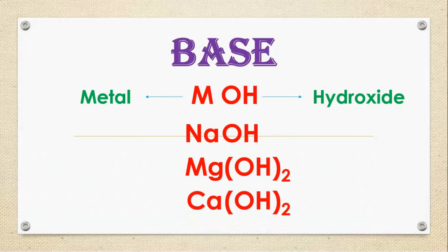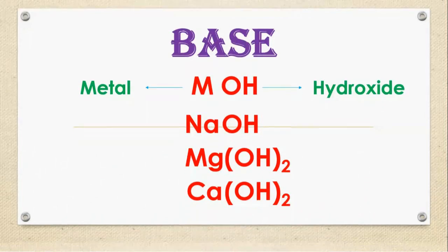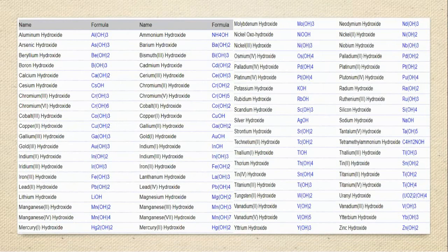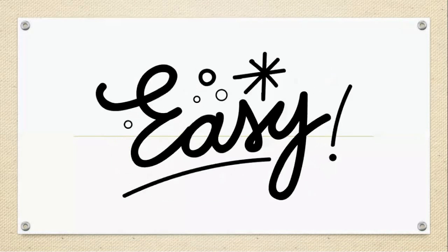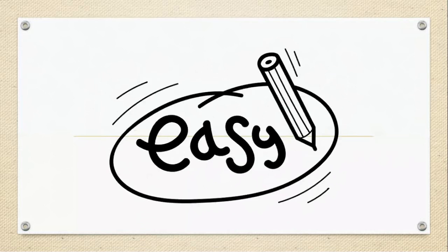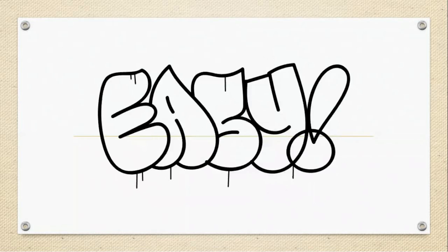So by looking at chemical formula, we can easily identify base. How? If a chemical formula is starting with a metal and ending with OH hydroxide, then it is base. You can see some list of bases and formulas. All these formulas you can observe, it is ending with OH. It is so easy for us to identify acids and bases. How to identify acid? It starts with hydrogen. How to identify base? That ends with OH.